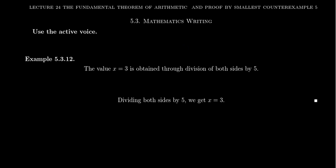So let's look at an example here. Let's take the sentence: 'The value X equals three is obtained through the division of both sides by five.' This is an example of writing the sentence in passive voice. If we were to rewrite it in active voice, you end up with: 'Dividing both sides by five, we get X equals three.'